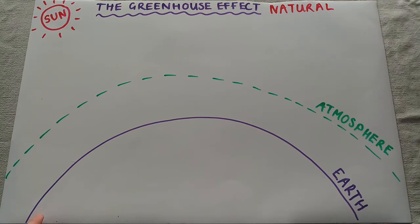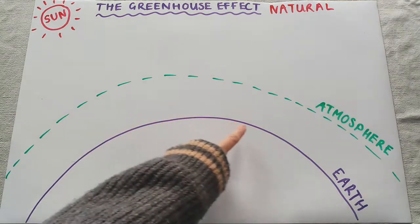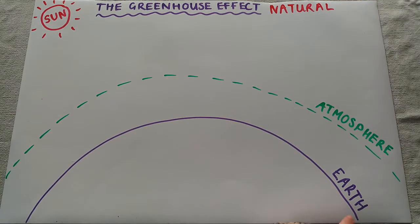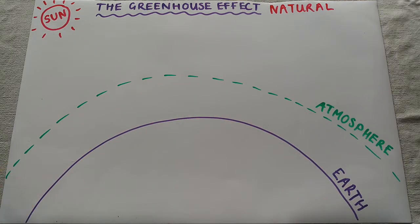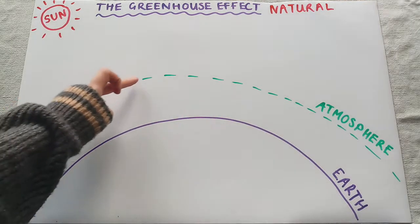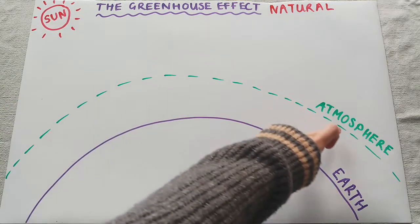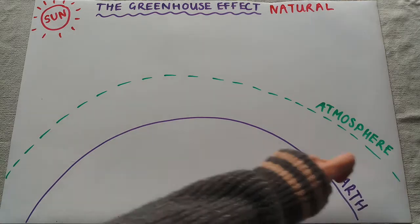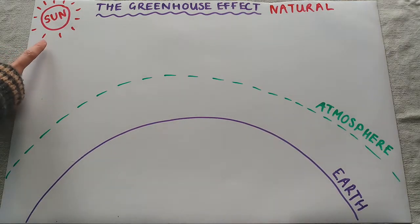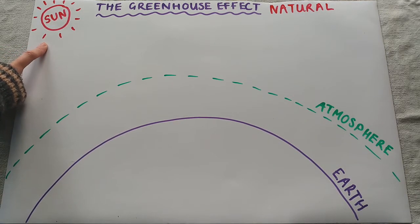Here, this purple bit is just the earth, and then this dotted green line is the atmosphere surrounding the earth. Up here we have the sun — obviously this is not drawn to scale.